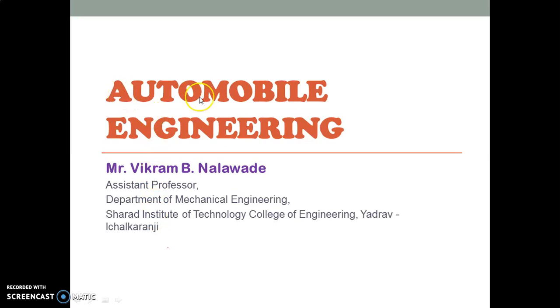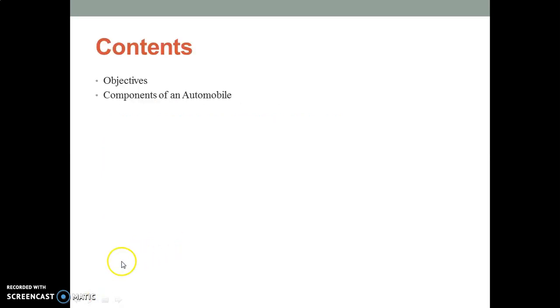In the previous lecture of automobile engineering, we covered some basic stations and basic components of automobiles. We covered the types of frame and suspension systems. Today the main portion will be covered starting from the content.